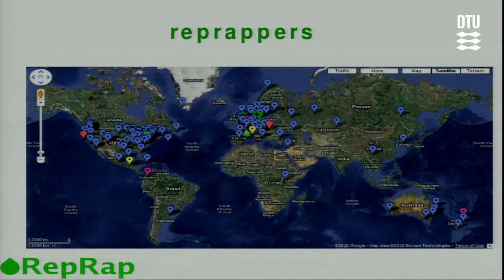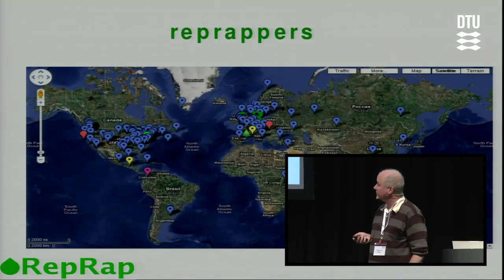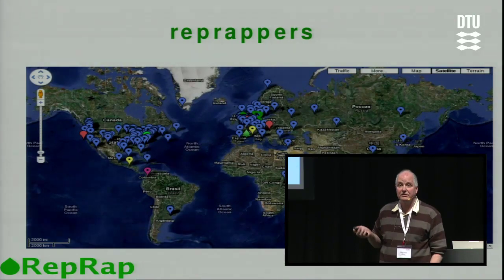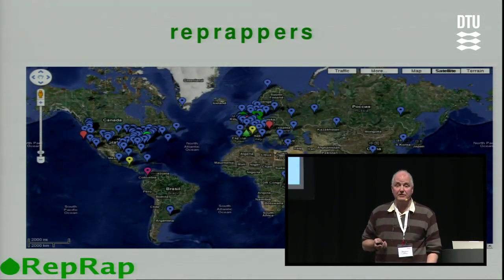This is a snapshot of people using the machines — we invite people who build a machine to put a lollipop on a map of the world. This was taken a couple of years ago and doesn't represent all users, but gives some idea of the geographical distribution — not dissimilar to the slide David showed for Arduino. We are reasonably confident that since 2008 — the first point where the machine copied itself — there are now more RepRap machines in the world than all the conventional proprietary 3D printers sold by the big 3D printer companies in the 30 years since the start of the industry. And we're growing exponentially, as is the nature of any object that can copy itself.